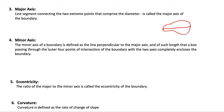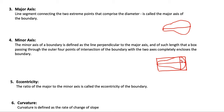The minor axis is defined differently from the major axis. The minor axis of a boundary is the line perpendicular to the major axis whose length is such that the line passing through the four outer points of intersection of the boundary with the two axes completely encloses the boundary. So the minor axis must be perpendicular to the major axis, and the bounding box formed by the extremes of both axes must fully enclose the boundary.